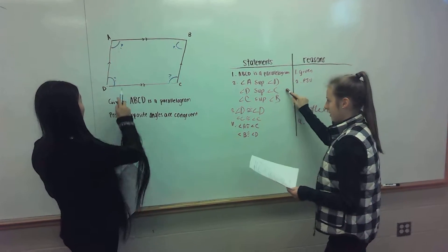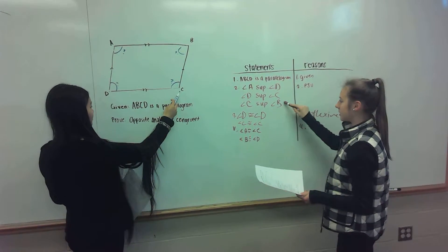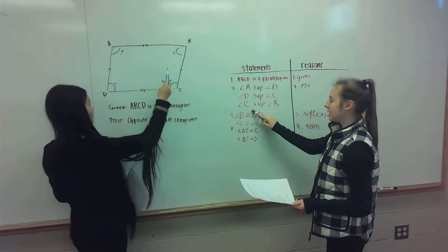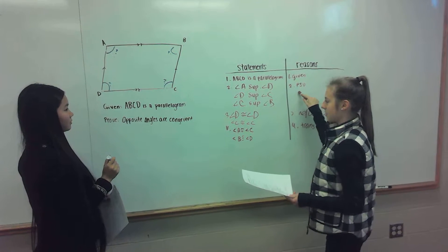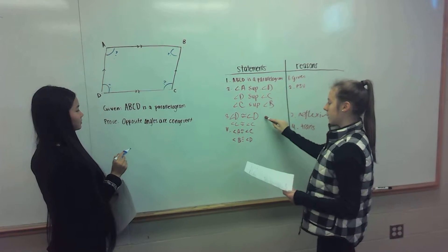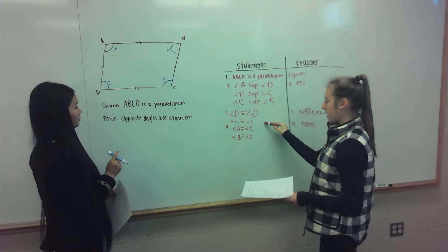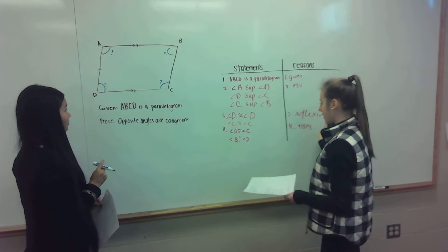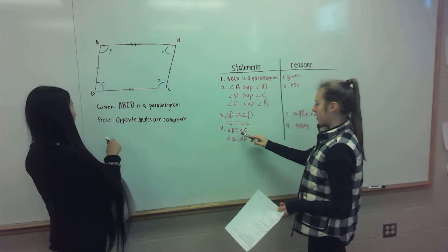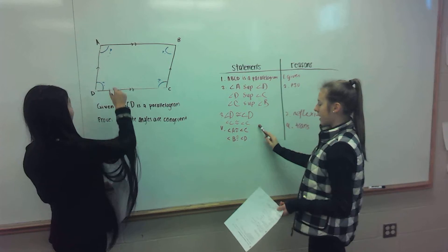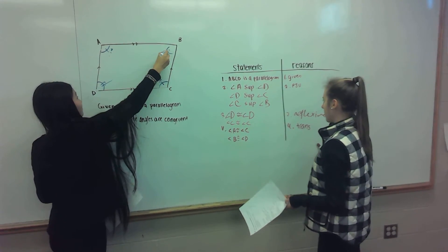Angle A is supplementary to angle B. Angle C is supplementary to angle C by reflexive. And therefore angle A is supplementary to angle C. And angle B is supplementary to angle D by reflexive.